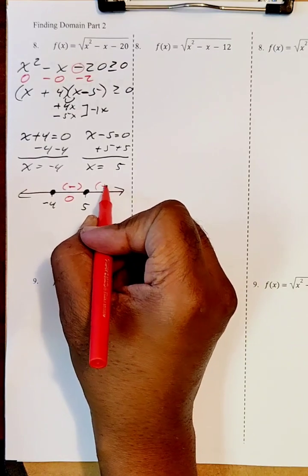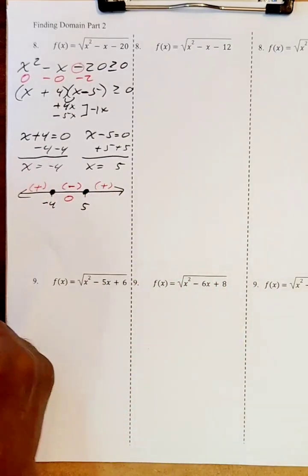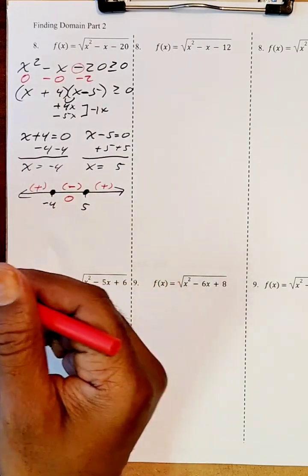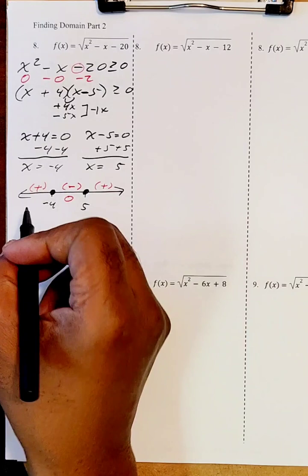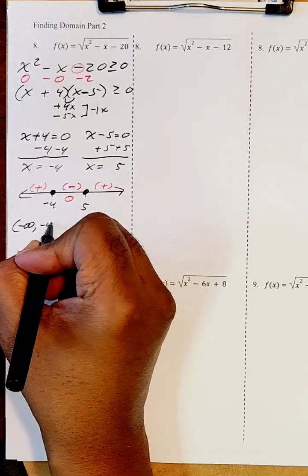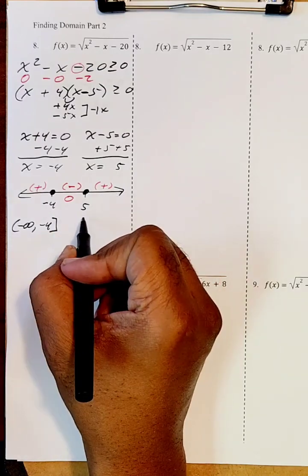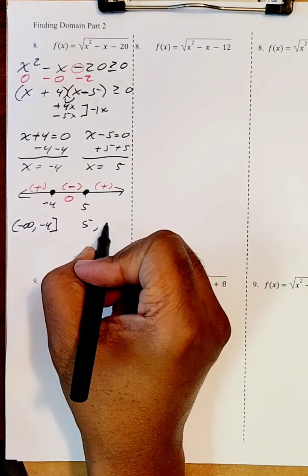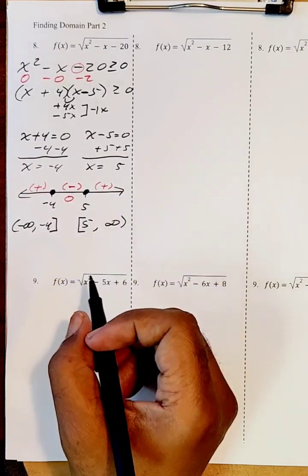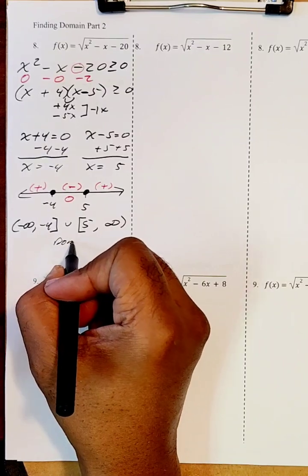If the middle region is negative, then the two outer pieces are going to be positive. Our domain will be the positive parts including the zeros. The positive parts go from negative infinity up to and including negative four, and then from five to positive infinity including five. We union those, and this is our domain.